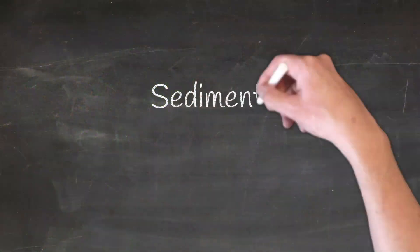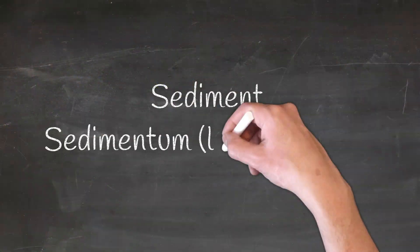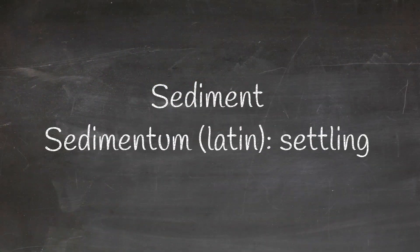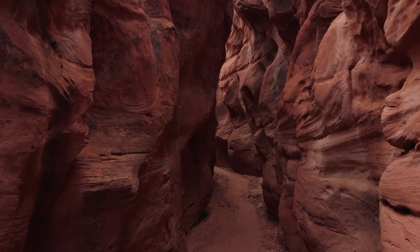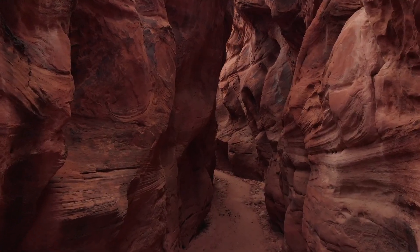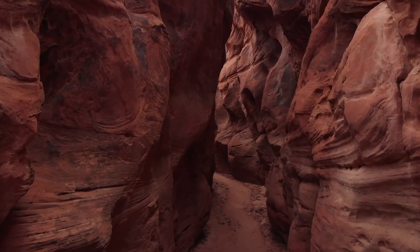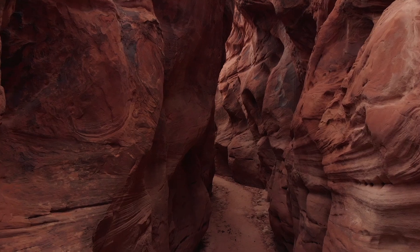The word sediment comes from the Latin 'sedimentum,' which means settling — and that is exactly how sedimentary rocks form. Different layers of particles like mud, sand, or clay settle downwards, and as more and more layers of sediment pile on top...